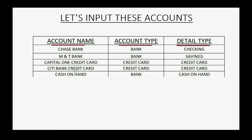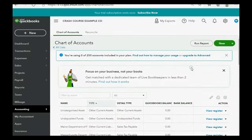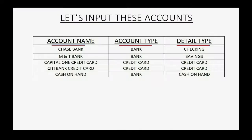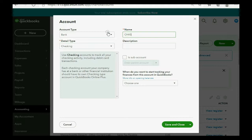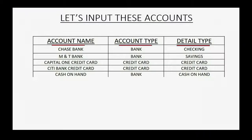We're going to put in each of these five accounts one by one: name, type, and detail type. We'll type names in capital letters so our eyes can clearly distinguish between accounts we added and accounts QuickBooks Online added. Chase Bank is a bank type of account with detail type Checking. We scroll all the way up, click New, leave account type as Bank, set detail type to Checking, and type in CHASE BANK.